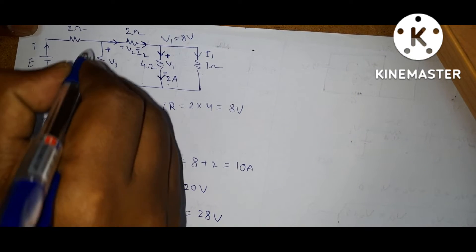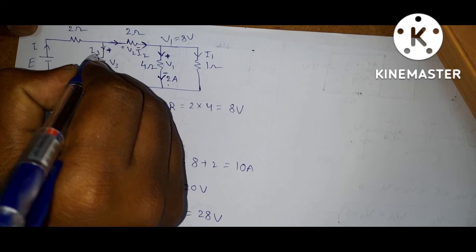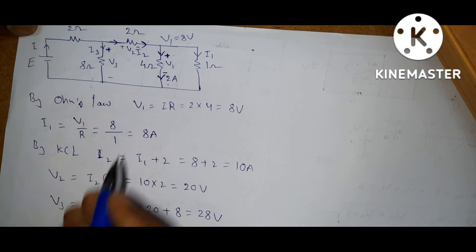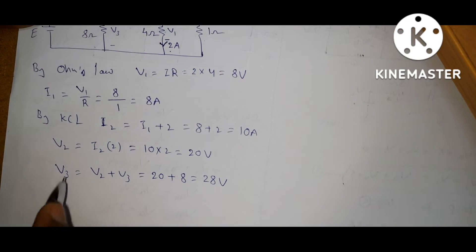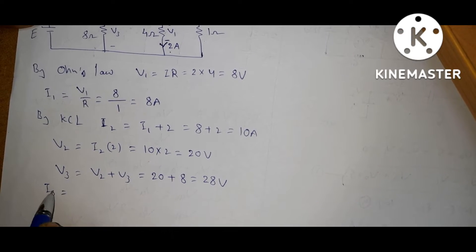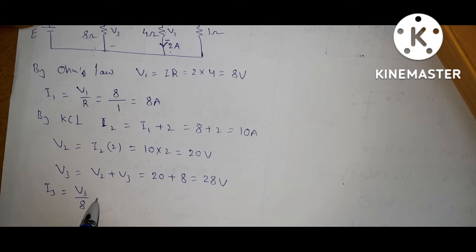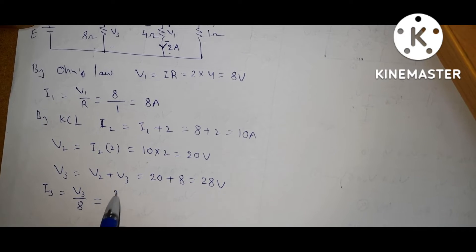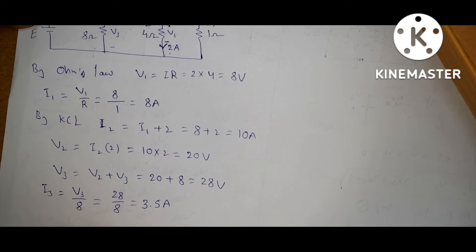The current flowing through the 8 ohm — let it be I3. Again by Ohm's law, what is I3? I3 is equal to V3 by R, which is V3 by 8. So 28 by 8, you will get 3.5 amps.